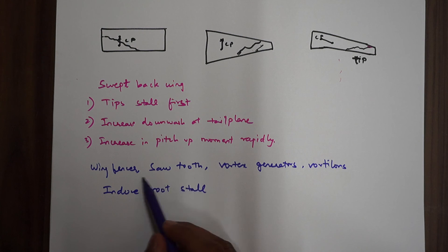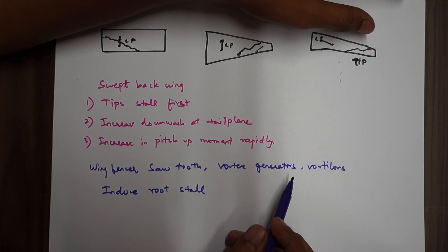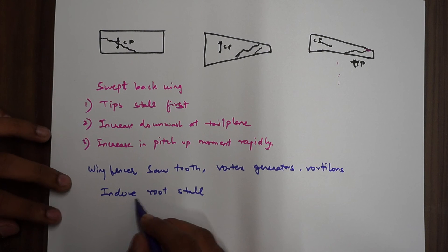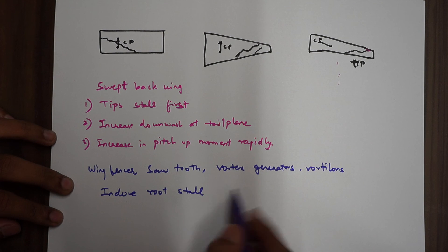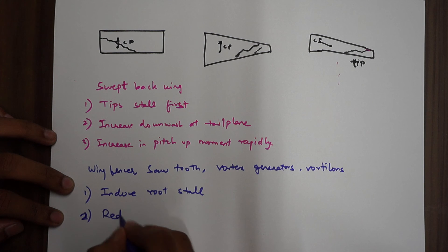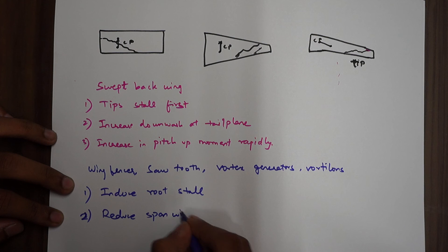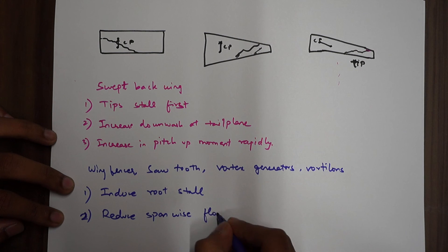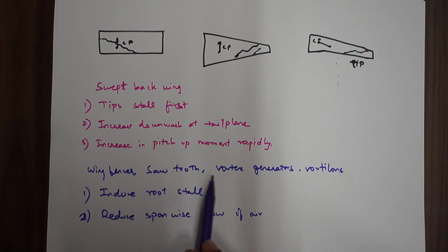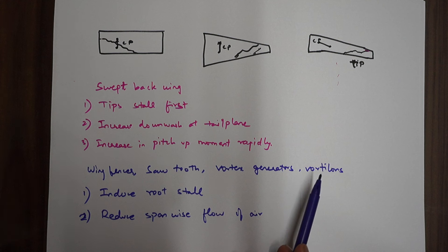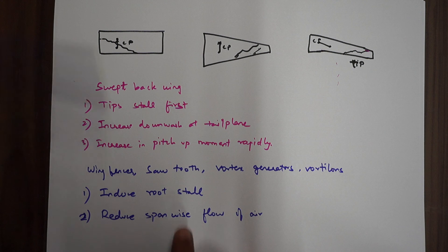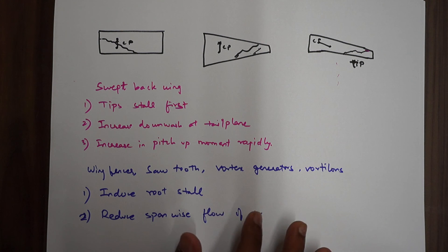The concept of using wing fences, sawtooth, vortex generators, and vortilons is to induce root stall — since tip stall is occurring, we need to induce root stall. The secondary objective is to reduce spanwise flow of air. These are the two primary objectives, with many further applications.